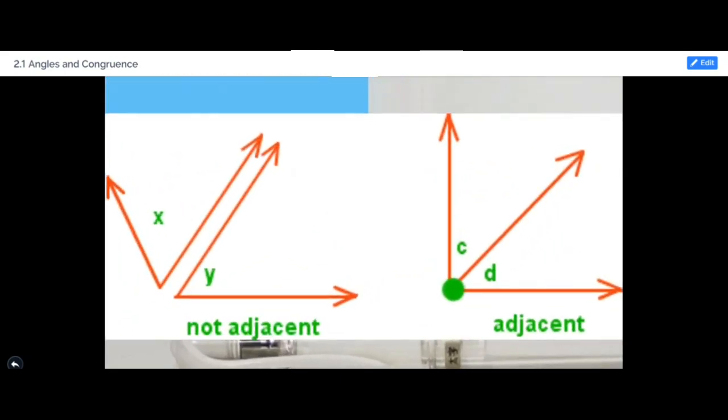In this diagram, we can see the difference between adjacent angles and non-adjacent angles. Non-adjacent angles have no common side and no common vertex, but adjacent angles have a common side and a common vertex.